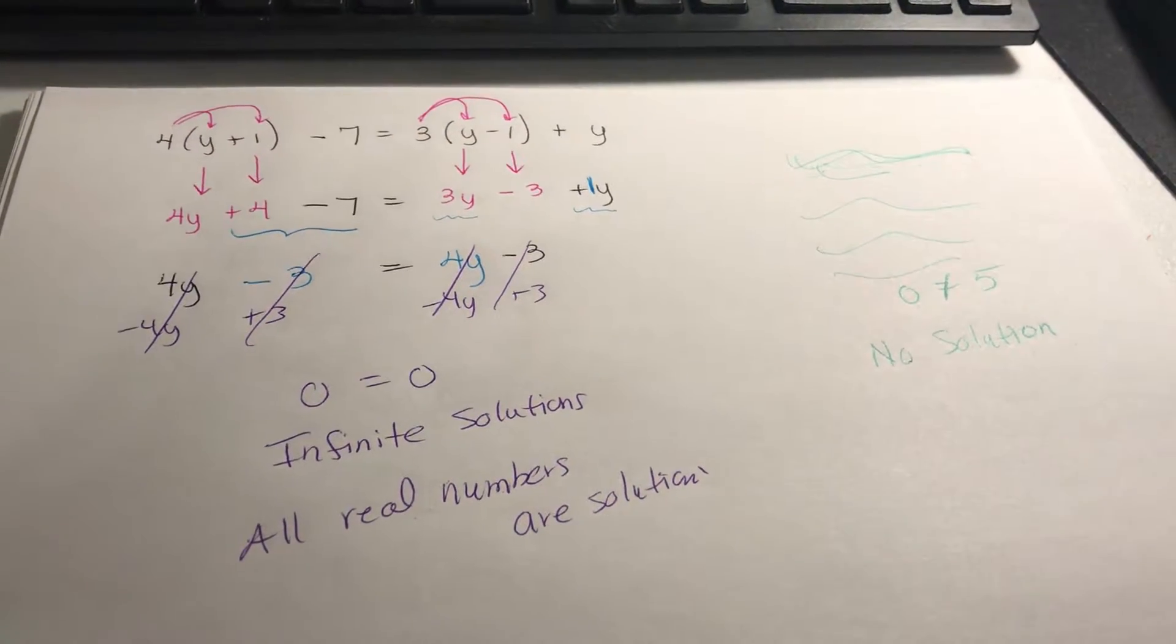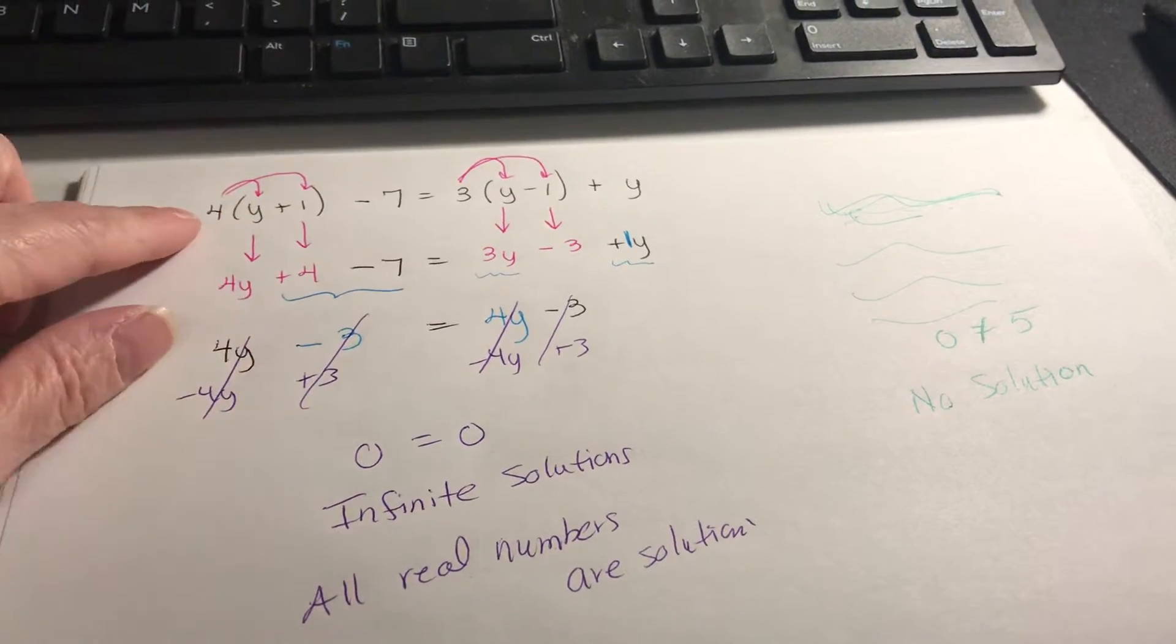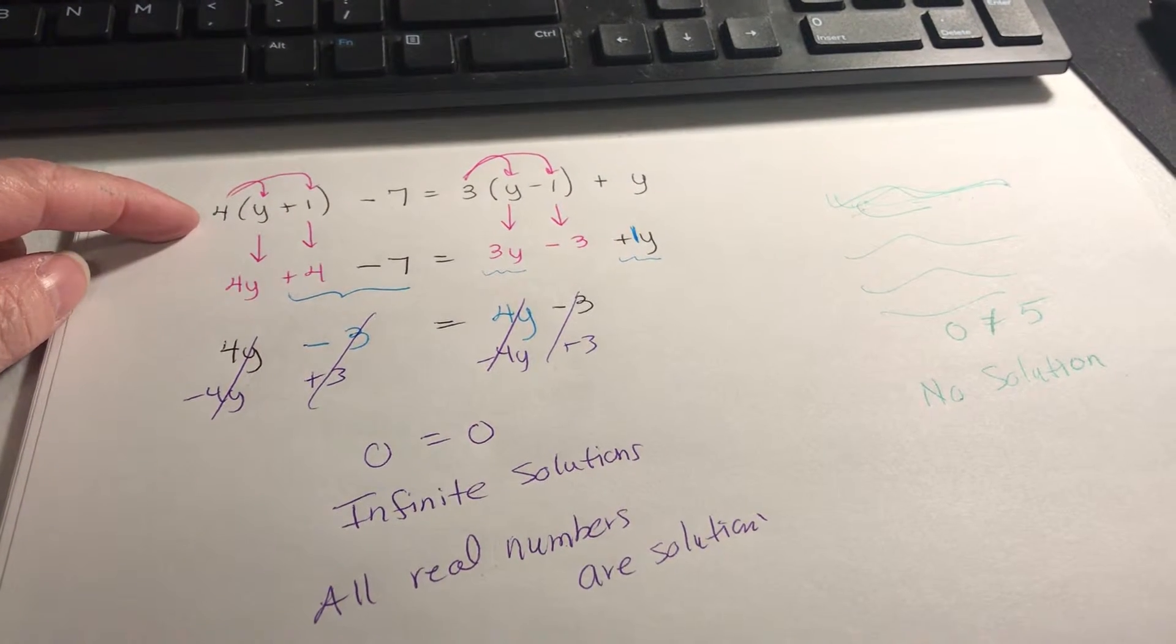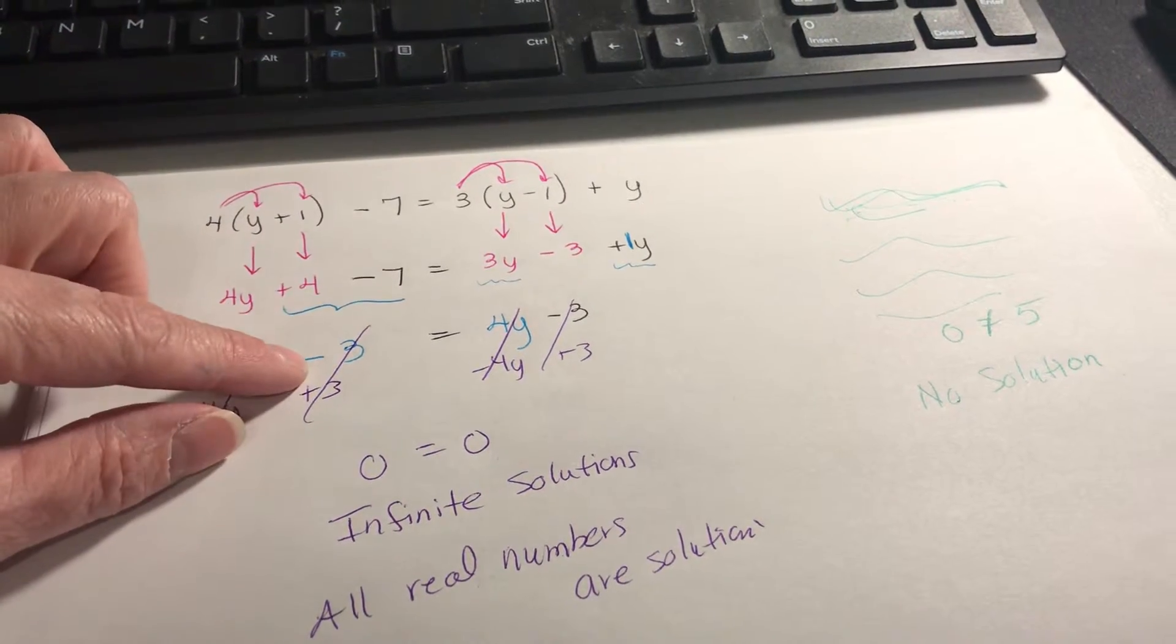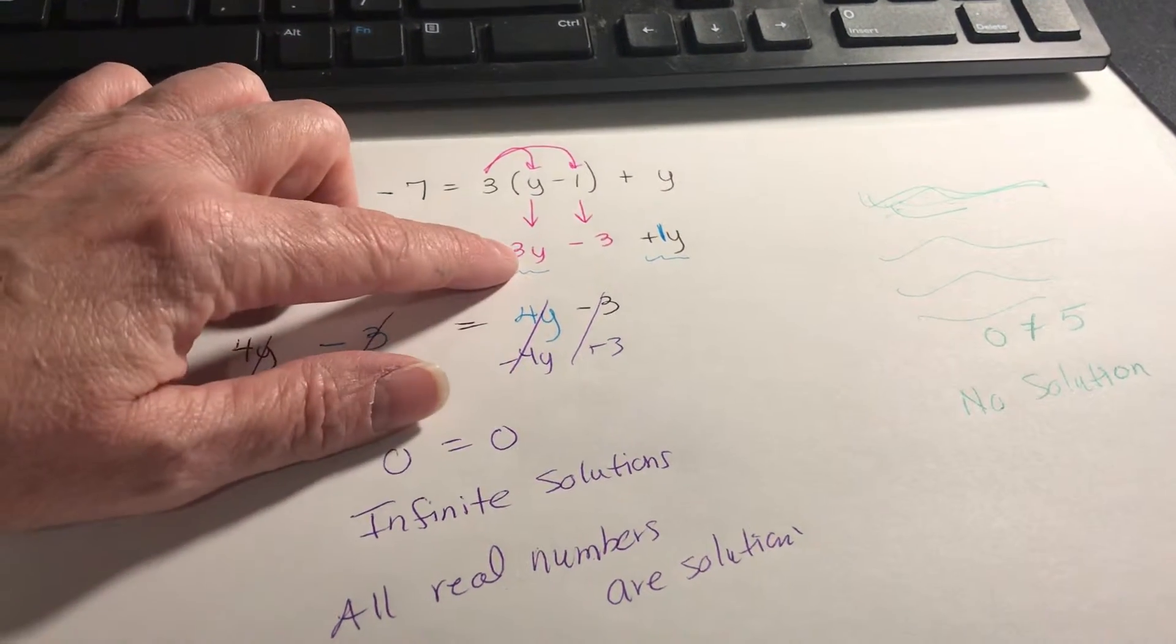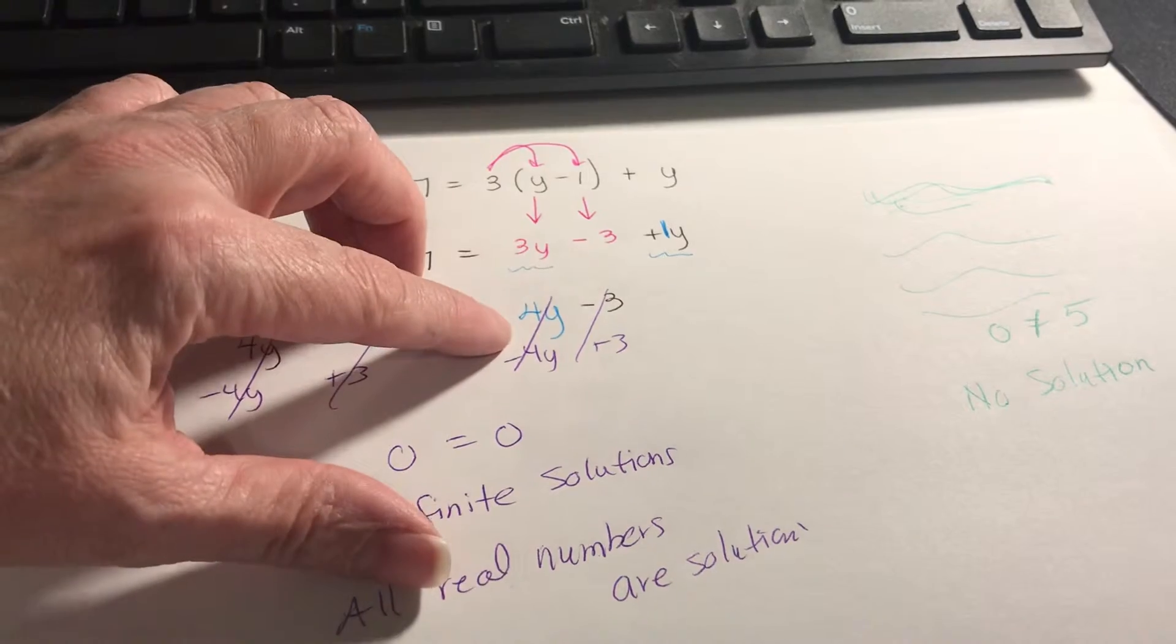Here's your other problem. I just went ahead and did it all already. I started by distributing. Then I combined my like terms. The 4 and the negative 7 would be a minus 3. Over here the 3y and the positive 1 is a 4y.